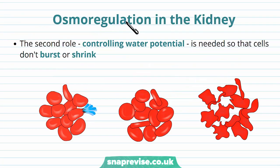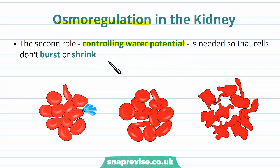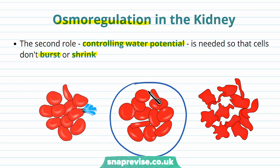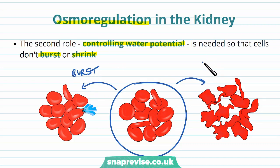The second important role of the kidneys is osmoregulation — controlling the amount of water and salts in the body, specifically the water potential of the blood and therefore the tissue fluid and our cells. We have to have the correct water potential around our cells so that cells don't burst or shrink. At the right level of water potential, red blood cells have their biconcave shape and are intact. Cells can burst if the water potential is too great, and cells can shrink if it's too low.